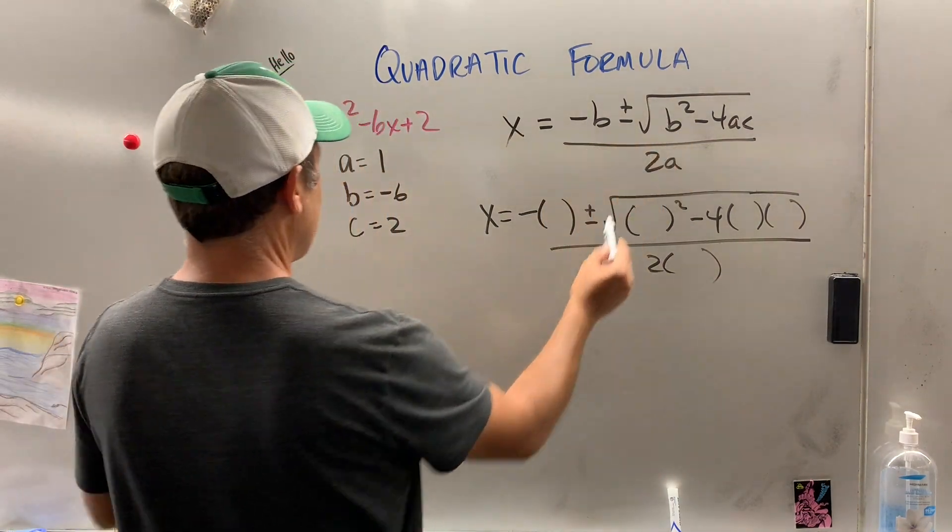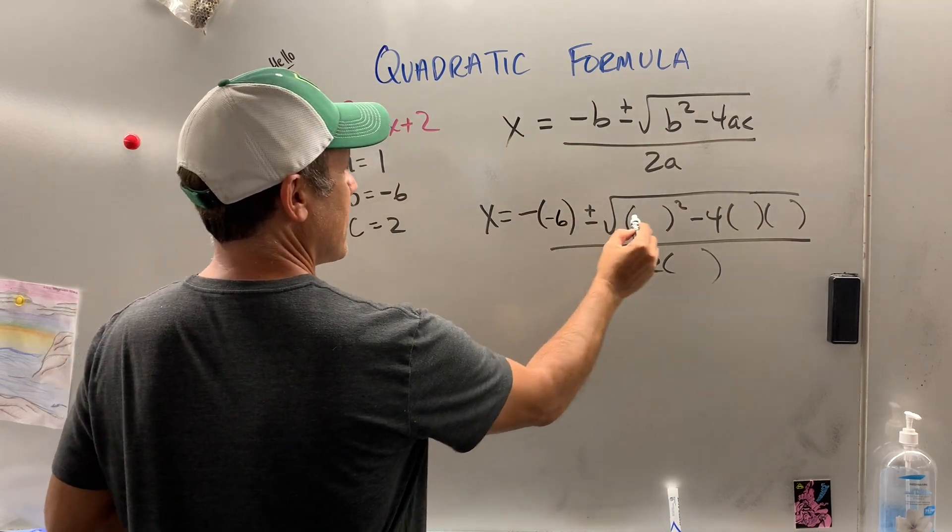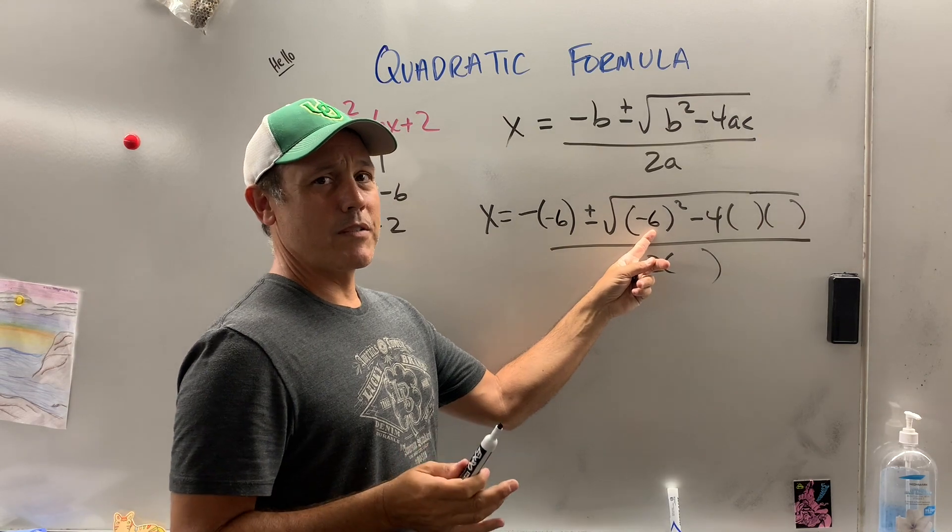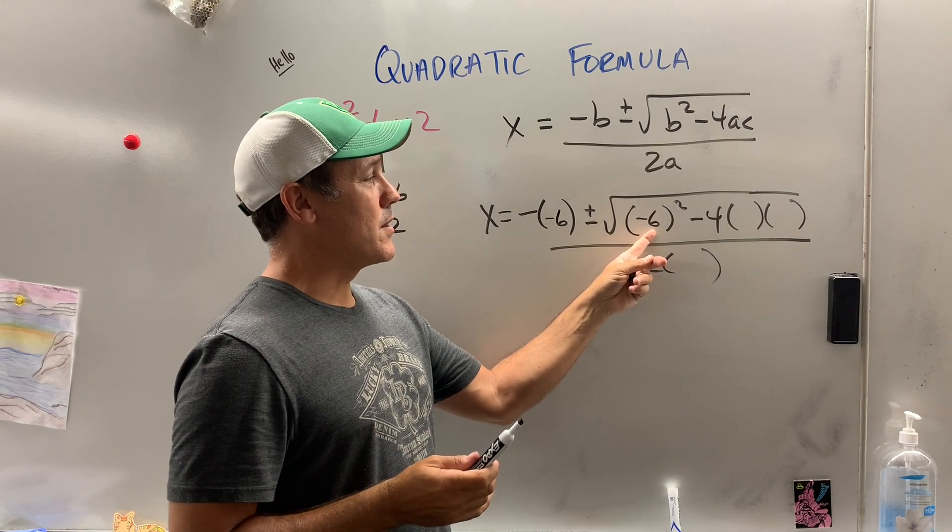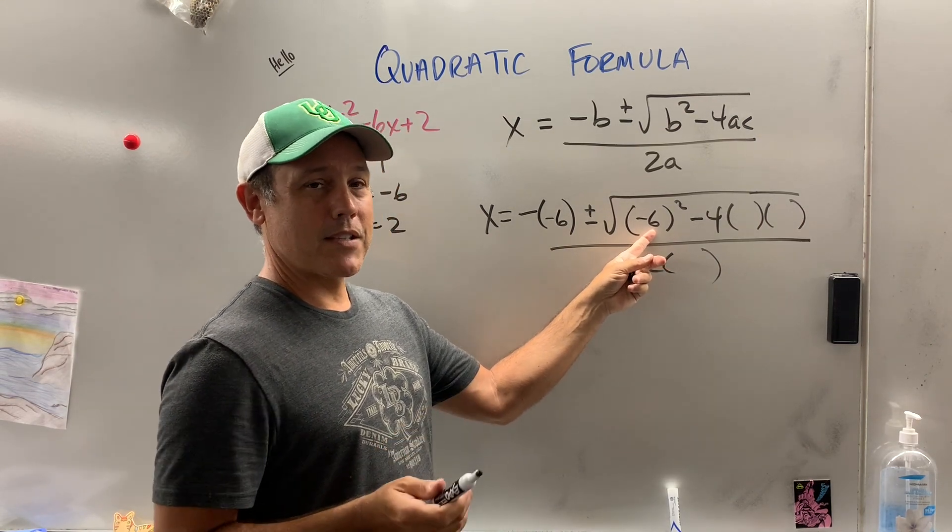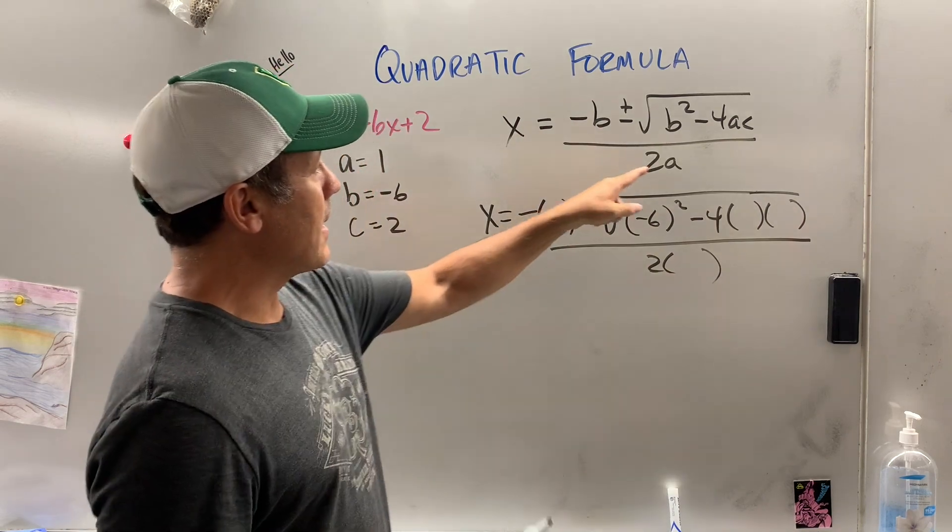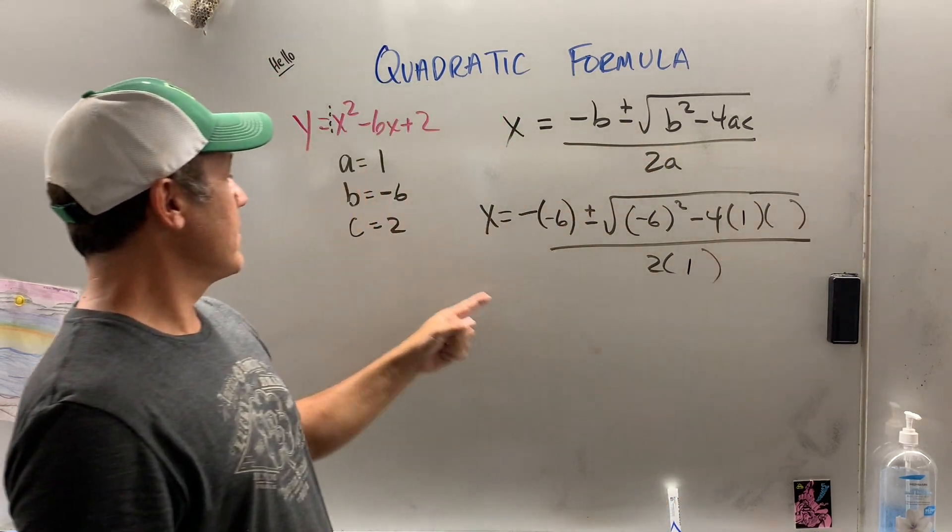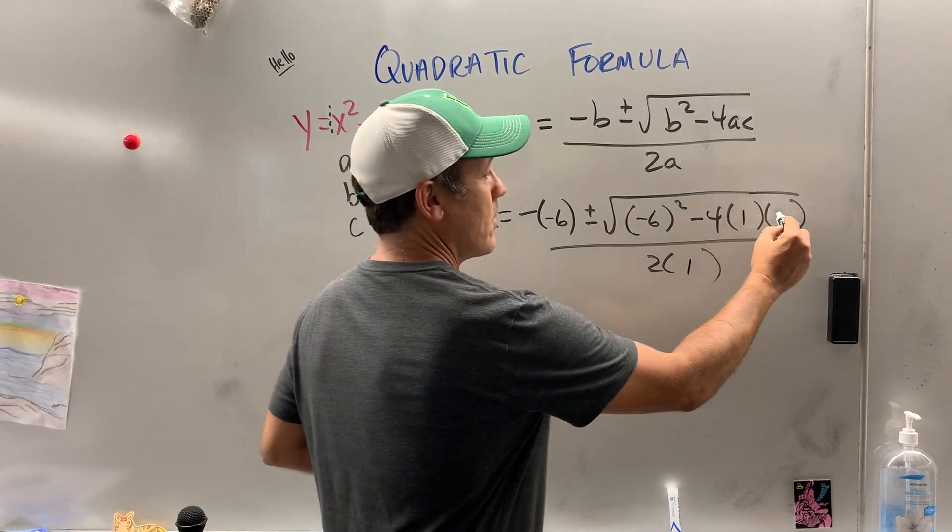Here are my b values. What is my b value? Negative 6. See right here, if you didn't put parentheses and you only relied on the calculator, you would have got negative 36 instead of positive 36. My a value is 1, so that goes here and here, and my c value is 2, so that goes right in there.